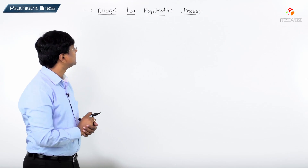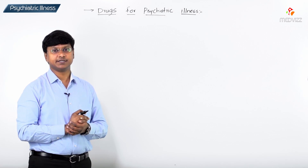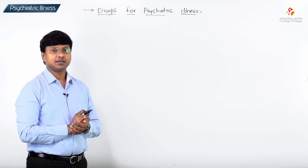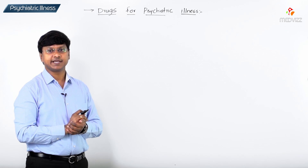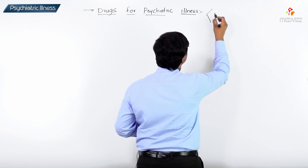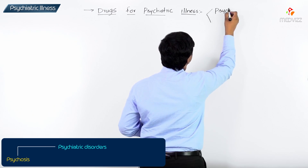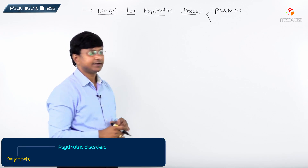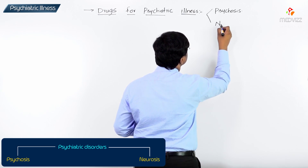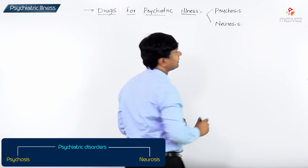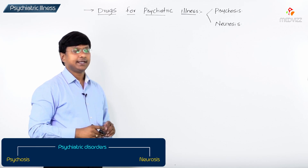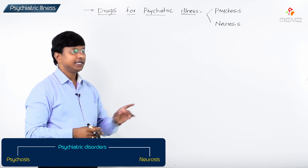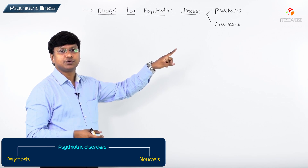Let me discuss the drugs for psychiatric illness. There are two major types of psychiatric disorders: number one, psychosis, and the other is neurosis. Let me tell you the difference between these two and what disorders are included under psychosis and neurosis.